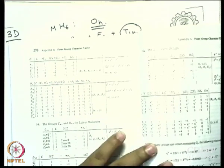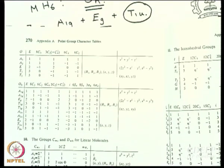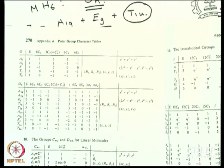Let us work in the O point group. The three SALCs are σ1−σ2, σ3−σ4, and σ5−σ6. The character of E is of course 3. For C3: no matter which C3 you apply, all sigmas change places, so σ1−σ3 does not remain σ1−σ3 — the character is 0.